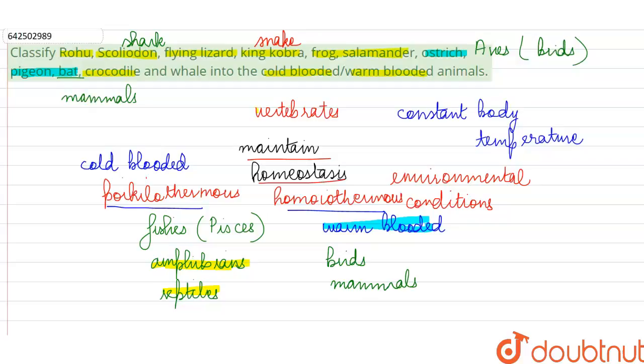So, when we are classifying animals or particularly vertebrates on the basis of their ability to maintain homeostasis, their ability to maintain constant body temperature despite the changing ambient conditions, we will say that fishes, amphibians and reptiles are cold-blooded or poikilothermus animals, whereas the birds and mammals are going to be homeothermus or as we call it, warm-blooded animals. And on the basis of that, we can classify the animals given in the list into cold-blooded or warm-blooded.